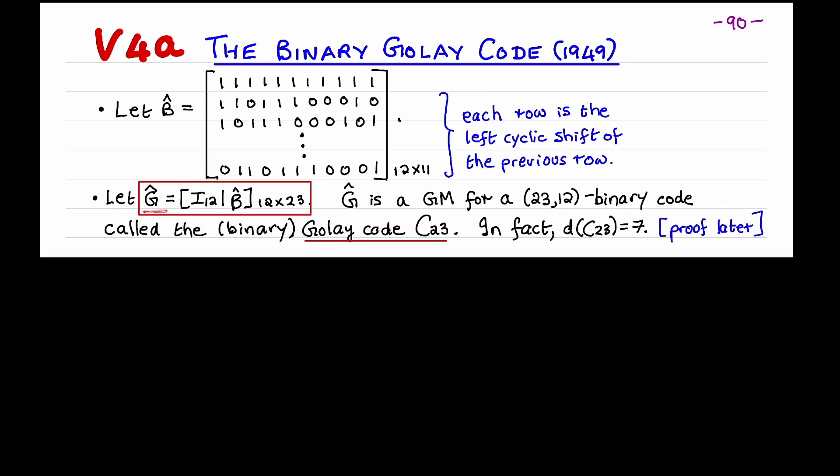Now let g-hat be this matrix with the 12 by 12 identity matrix on its left, and the matrix b-hat on its right. So g-hat has 12 rows and 23 columns. Its rank is 12. So g-hat is a generator matrix for a binary code of length 23 and dimension 12. This code is called the binary Golay code C23. I'll state as a fact that C23 has distance 7, and so it's a three-error correcting code. I'll prove this later on in the lecture.